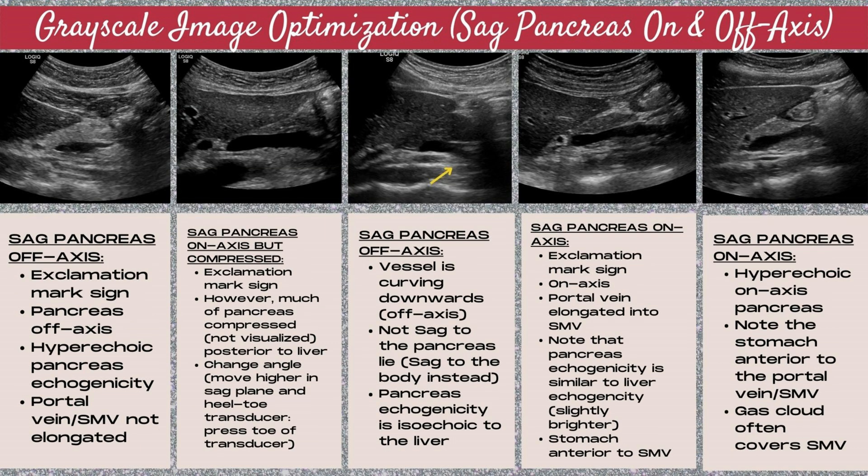So how do you tell if the sagittal pancreas is on-axis versus off-axis? In the image to the far left, this sagittal pancreas is off-axis — we're looking for the exclamation mark sign, and this is a hypoechoic pancreas. However, we're only seeing a portion of it because the portal vein and the SMV are not elongated fully. In the next image over, the sagittal pancreas is on-axis, but it's compressed. Just like the pancreas neck and body can be compressed in a transverse image, it can also be compressed in a sagittal image.